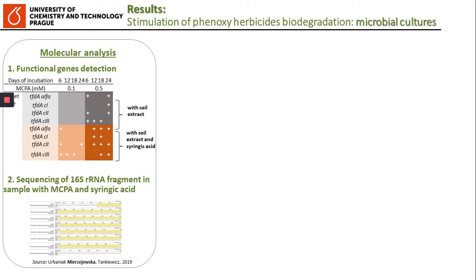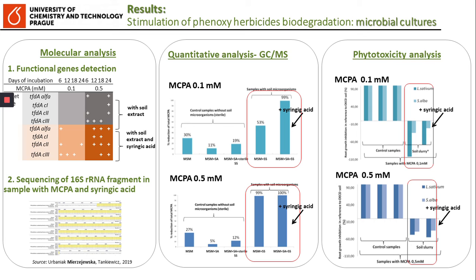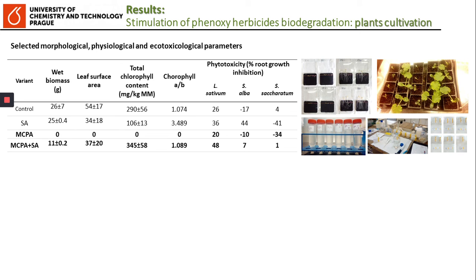Our results confirm the enhanced number of functional degradation genes in samples amended with plant secondary metabolites. What is more, we observed higher removal of herbicide in variants with plant secondary metabolites. However, this effect was mostly visible at lower concentrations of the herbicide. We also noted decreased phytotoxicity of soil when plant secondary metabolites were applied. As you can see here, the addition of herbicide together with plant secondary metabolites — in this case MCPA and syringic acid — decreased the toxic effect of the herbicide applied solely.